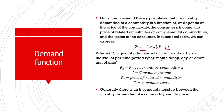Generally, keeping all other things constant—income, prices of related goods, and taste of the consumer—we theorize an inverse relationship between price of the commodity and quantity demanded. When the price of a commodity rises, quantity demanded goes down, and vice versa. So there is generally an inverse functional relationship between quantity demanded and price.